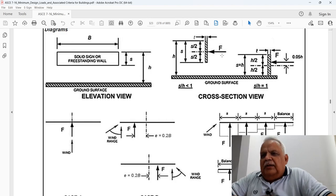F, as I have already showed you before, this force is acting at the mid of the billboard. And if it is a freestanding wall or freestanding billboard on the ground, then there is an eccentricity which is 0.05 times H.